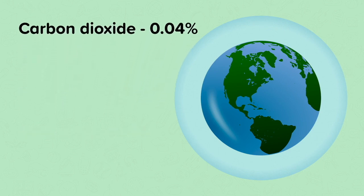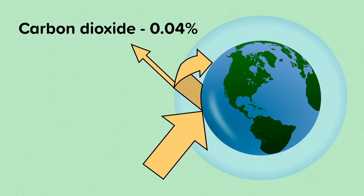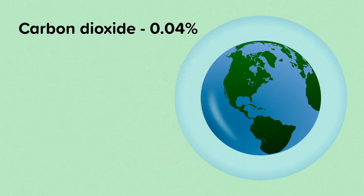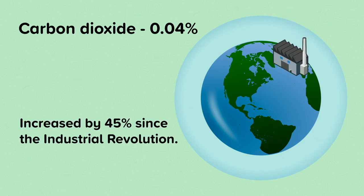Carbon dioxide is the most important gas for controlling the Earth's temperature. Greenhouse gases absorb energy, including the infrared radiation emitted by the Earth. Infrared radiation is part of the electromagnetic spectrum and is a method of heat transfer. These gases then re-emit the energy back towards the Earth. Without greenhouse gases, the Earth would be minus 18 degrees Celsius, which is 0 degrees Fahrenheit. The more greenhouse gases there are in the atmosphere, the higher the Earth's temperature. Carbon dioxide has increased by 45% since the Industrial Revolution.